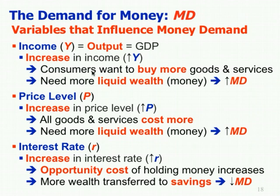The interest rate has an inverse relationship with money demand. If you hold money, you earn no interest; if you put your money into savings, you earn interest. You can either put your wealth towards spending or savings. Put it towards spending, you can buy goods and services but don't earn interest. Put it towards savings, you earn interest but can't easily buy goods and services. Therefore, the interest rate is basically the opportunity cost of holding money. If the interest rate goes up, you're going to want more of your money earning interest, so you transfer more wealth to savings, reducing your money demand.